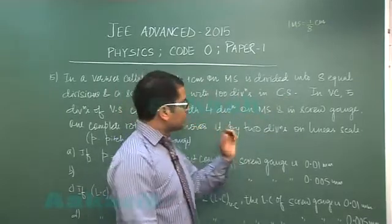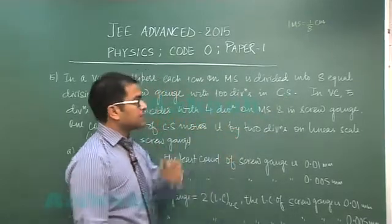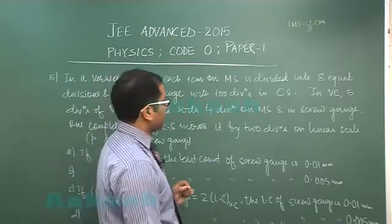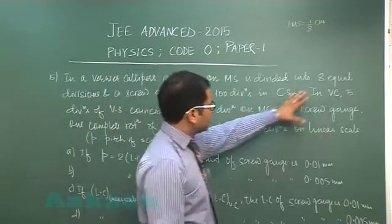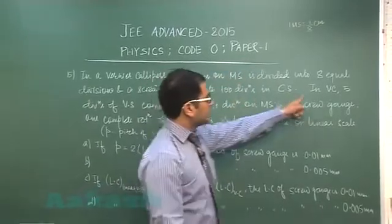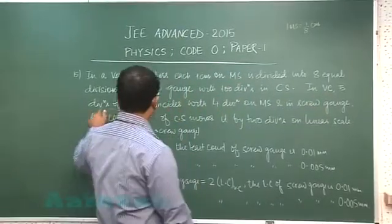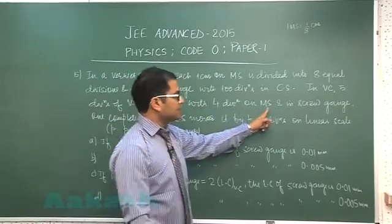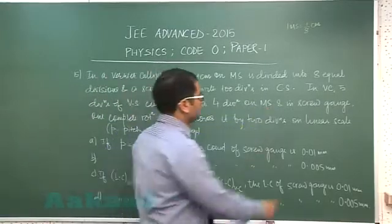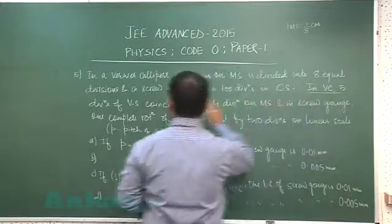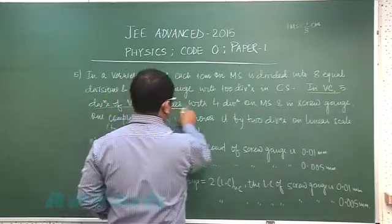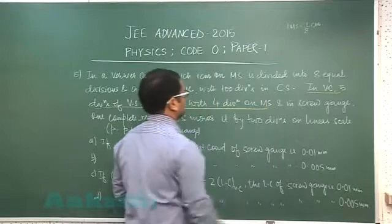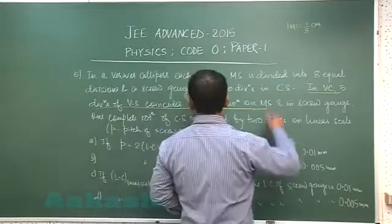The screw gauge has a total number of 100 divisions in the circular scale. First, let me cover the vernier caliper since the things are quite intermixed. In the vernier caliper, 5 divisions of vernier scale coincides with 4 divisions on main scale.